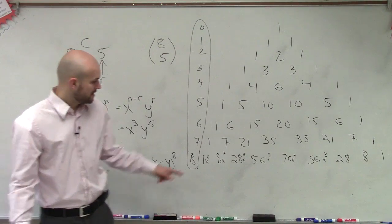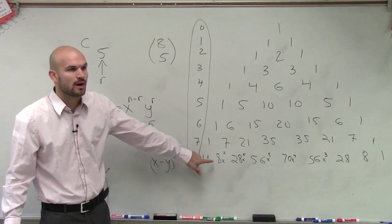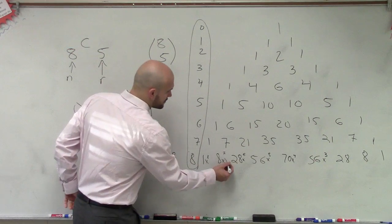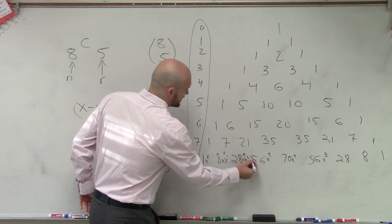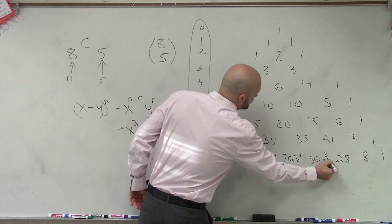And then if we want to find the y, remember, y needs to be to the 5th. Well, remember, there's no y. That's y to the 0 for the first one. So this would be y to the 1st, y 2nd, y cubed, y 4th, and y 5th.